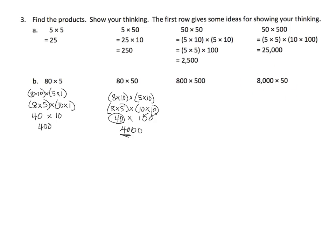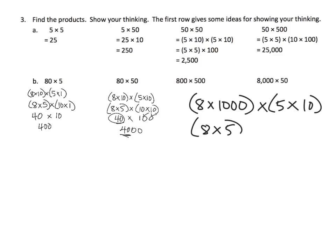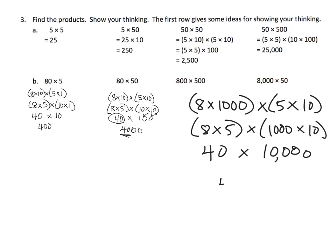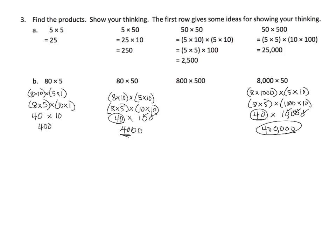Let's do one last example: 8,000 times 50. Eight thousand is 8 copies of a thousand, and fifty is 5 copies of 10. Using the commutative property to rearrange and the associative property to regroup, we have 8 times 5 times 1,000 times 10. Eight times 5 is 40, and 1,000 times 10 is 10,000. So the answer is 40 with four extra zeros — that's 400,000.